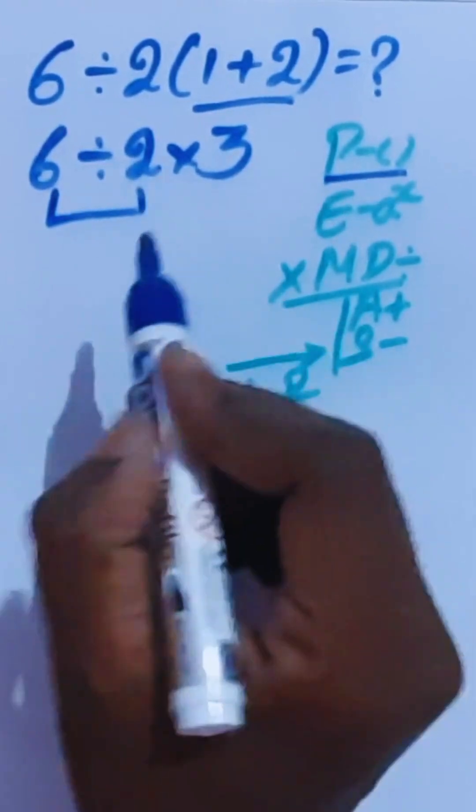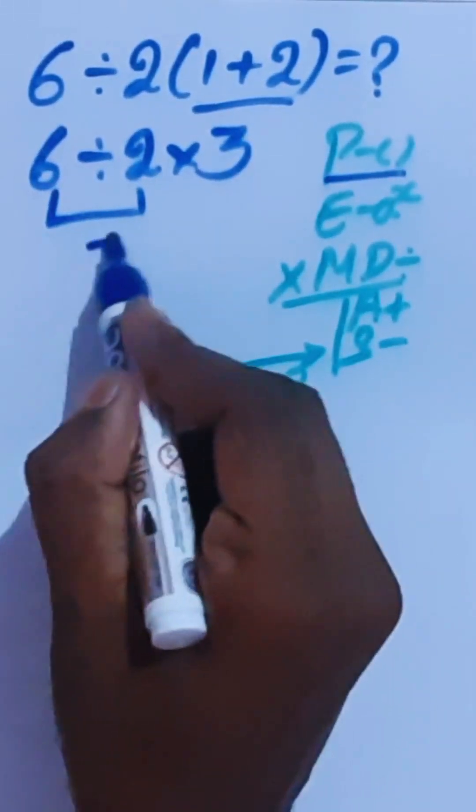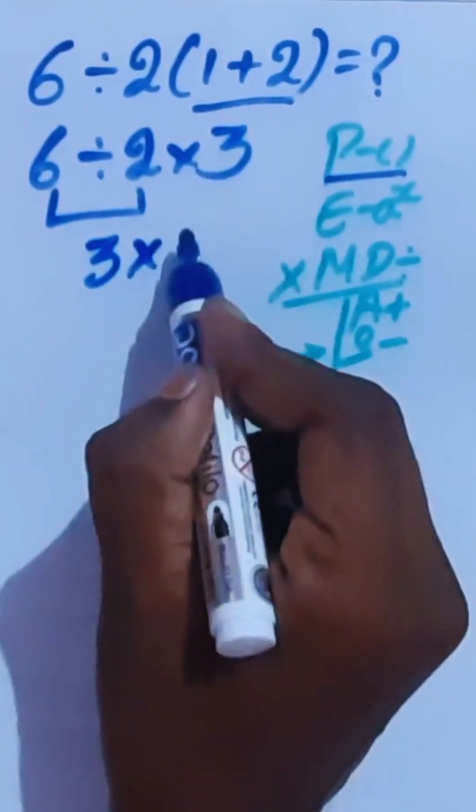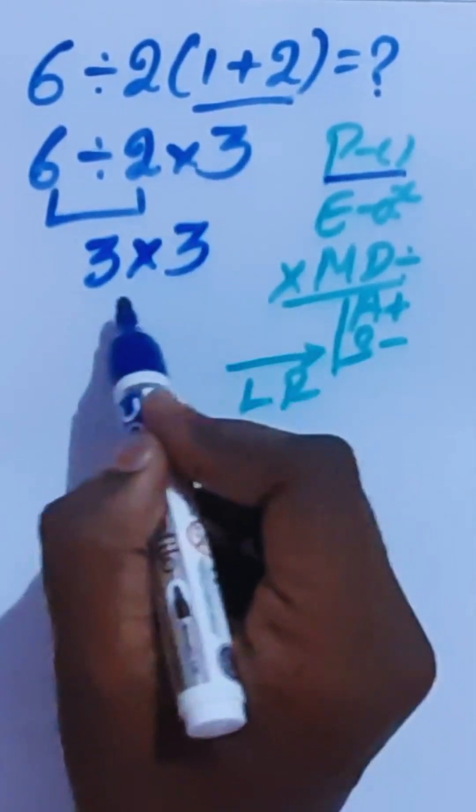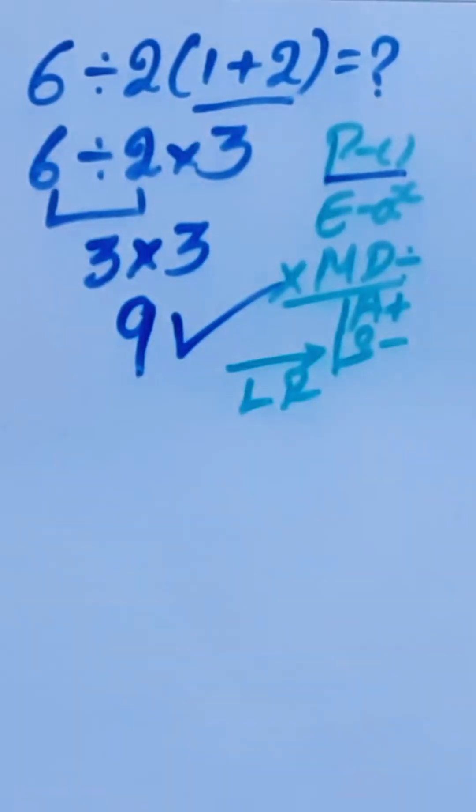Left-to-right means we do 6 divided by 2 first. 6 divided by 2 is 3, times 3. Now 3 times 3 is 9. 9 is the correct answer.